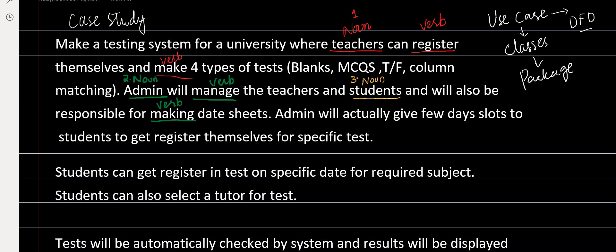You have to read carefully — the next line says admin will actually give a few day slots to the students to get registered for a specific test. It simply means that when we say admin is making the date sheet, we mean admin is going to allocate or specify certain days in which the student can pick and register for a specific test. So date sheet making is a verb related to admin, and also related to the student. We can name it something better than 'making the date sheet.'